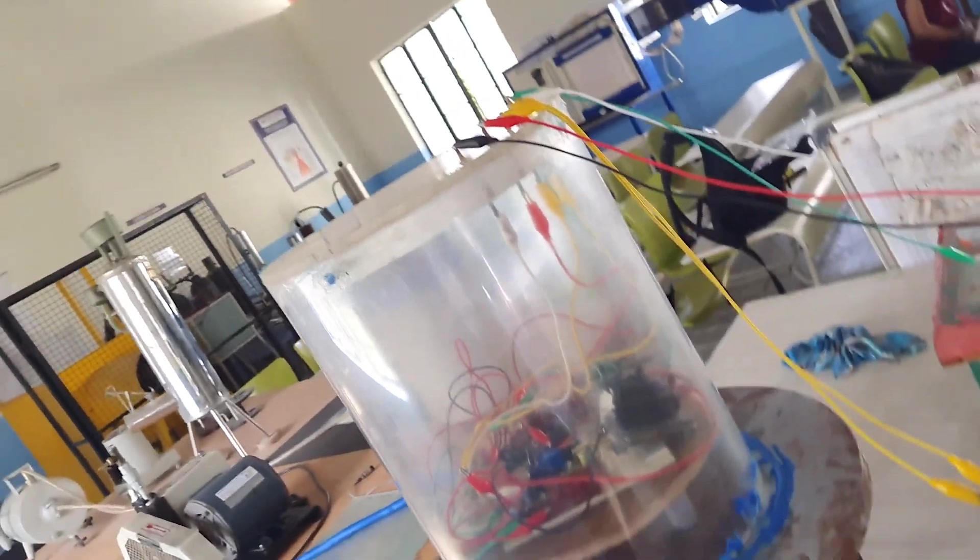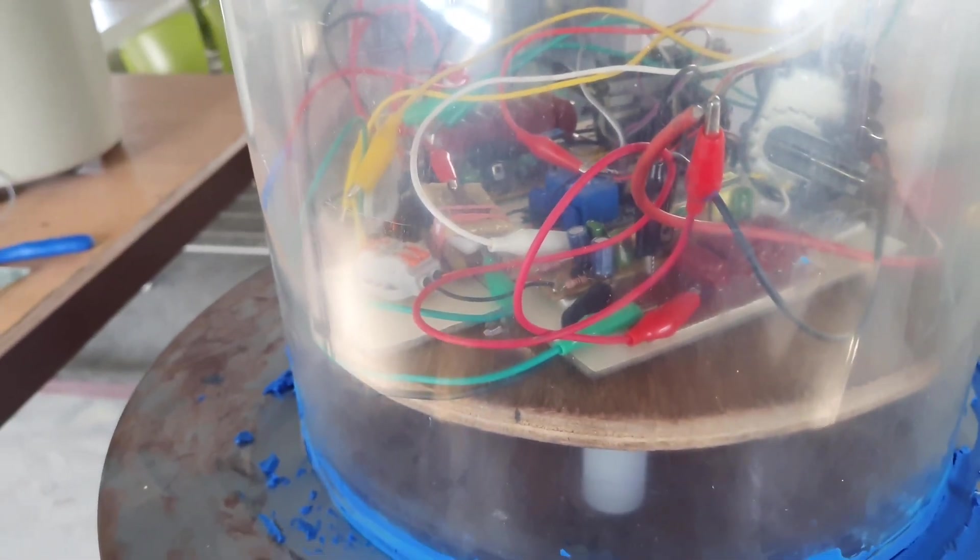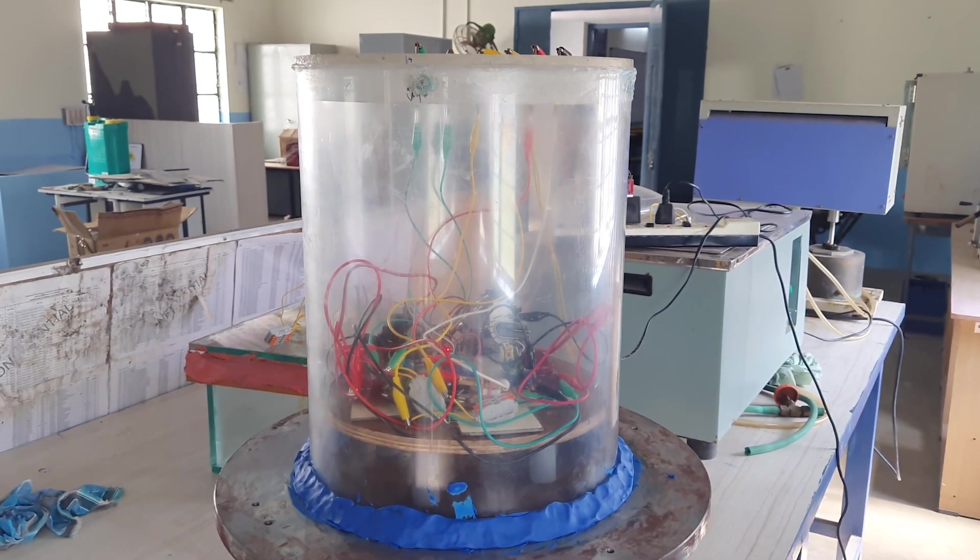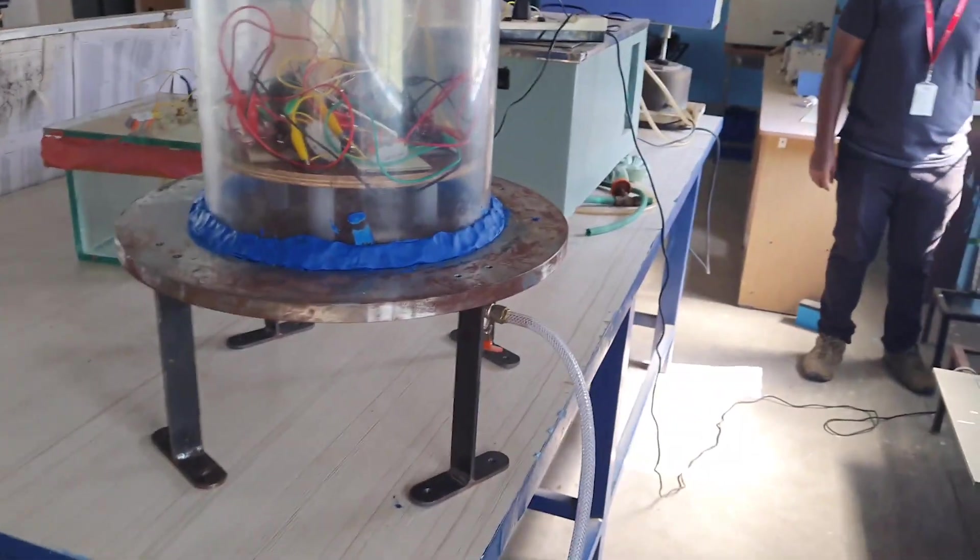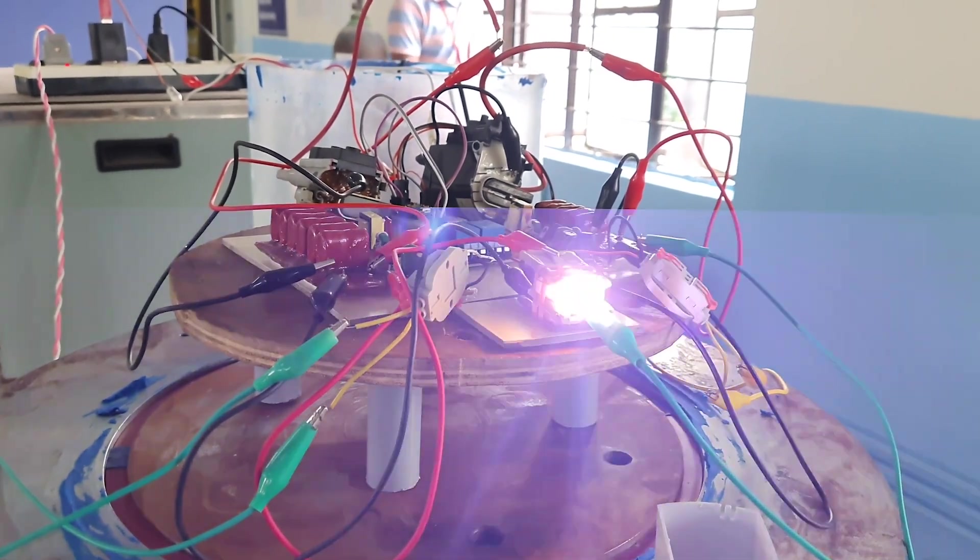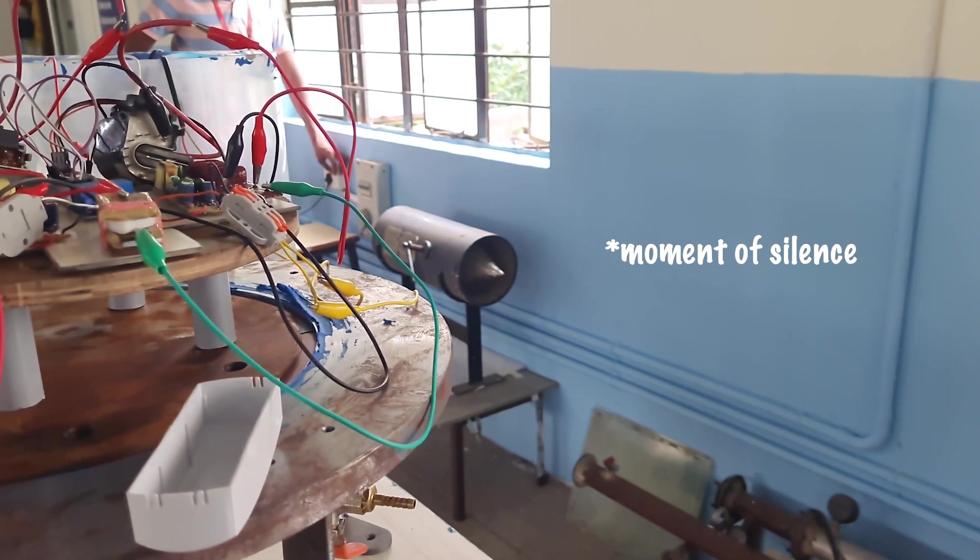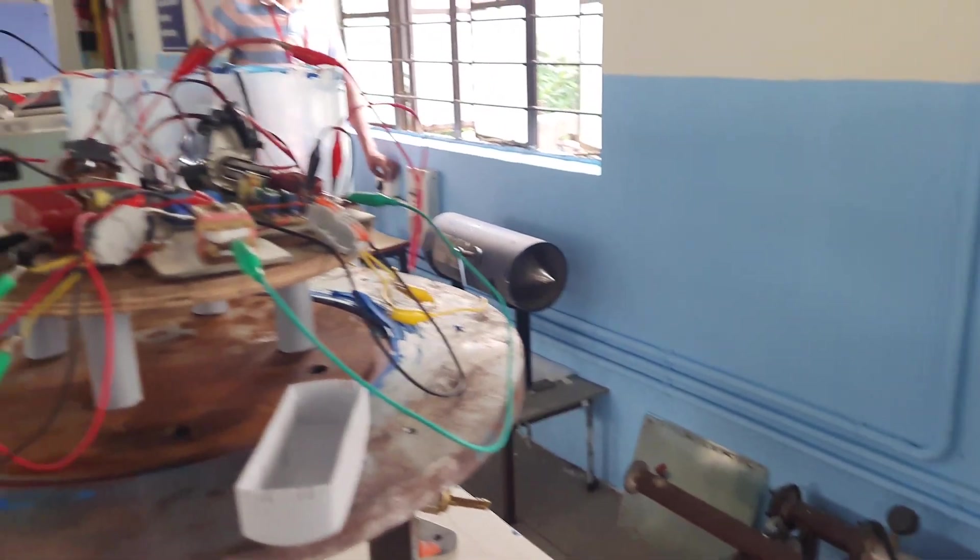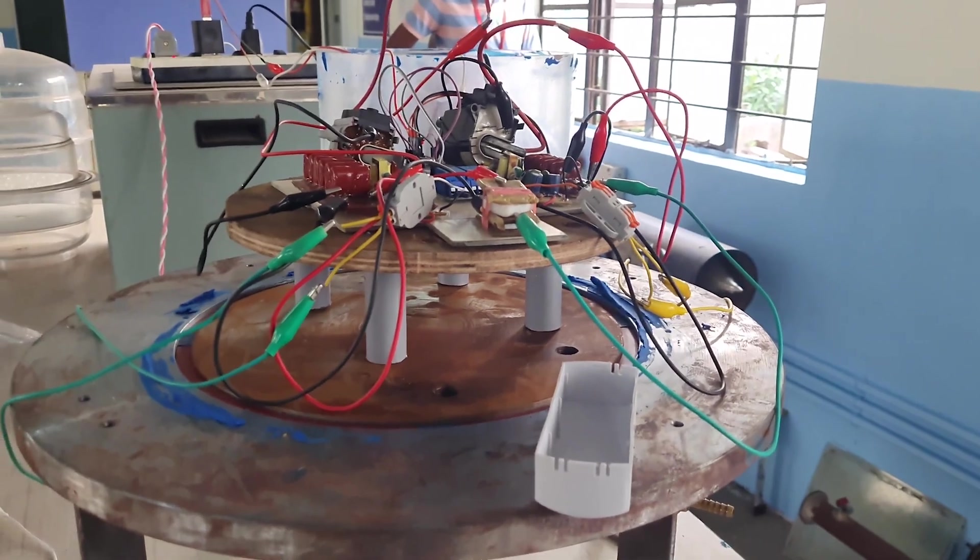With the vacuum chamber ready, it was time to integrate the circuit in there. And how did we not see that coming? We believe there was a significant power variance between the power at the university and the household supply. We removed the chamber and tested just the circuit. After replacing it, it turned out that the relay wasn't working. After replacing it, it was time for the final test.